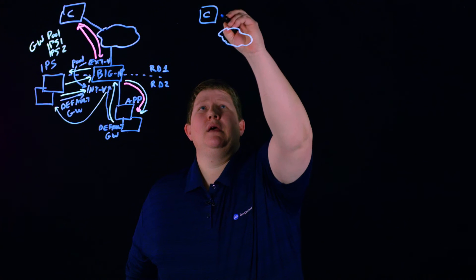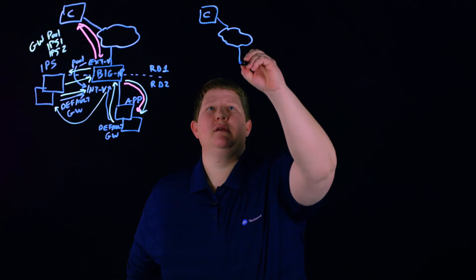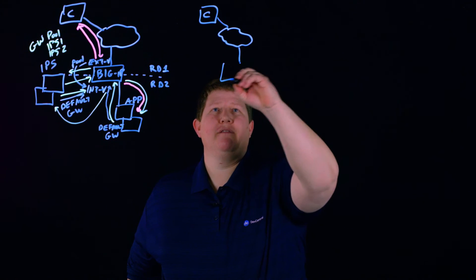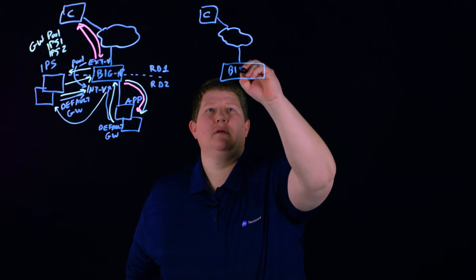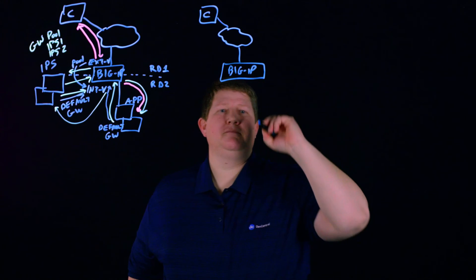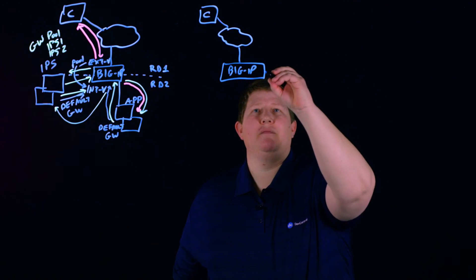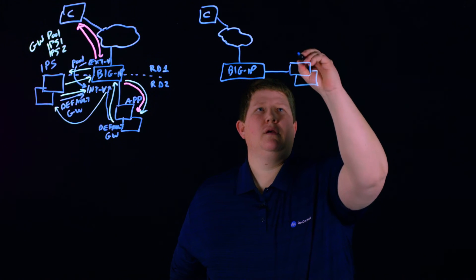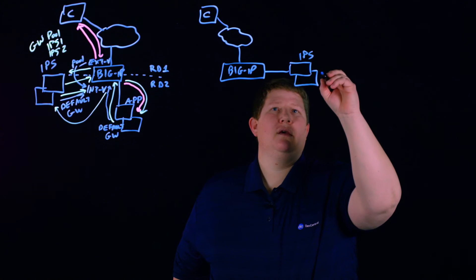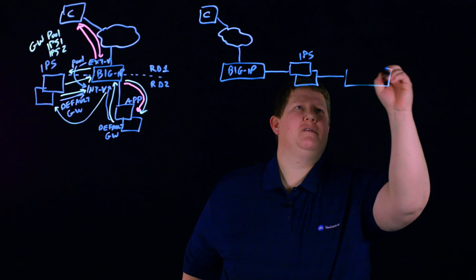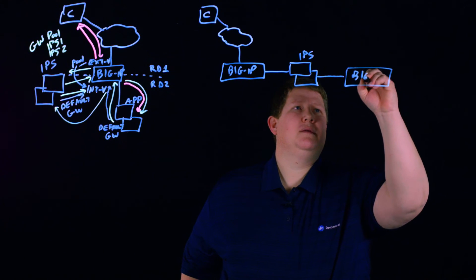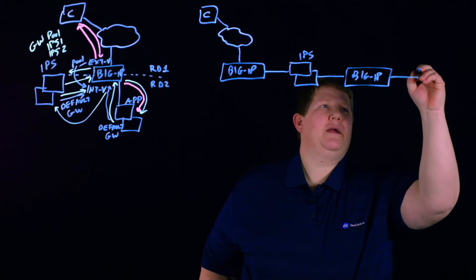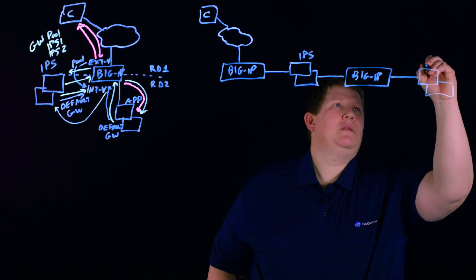The flow is pretty similar. We have a cloud and a client come in, first we have our BIG-IP, then from there we have our IPS, then from there we have another BIG-IP, and then carrying on to the app servers.